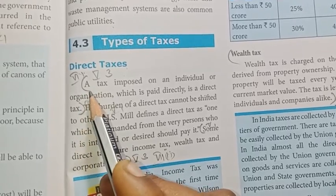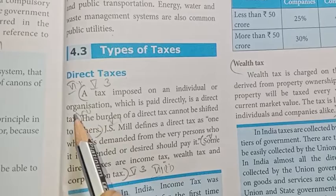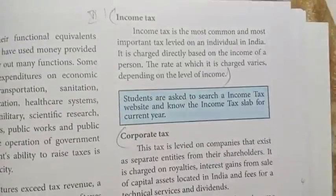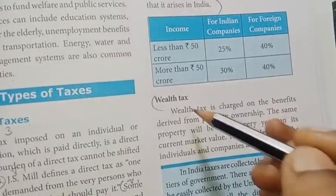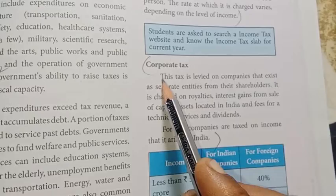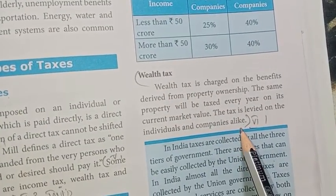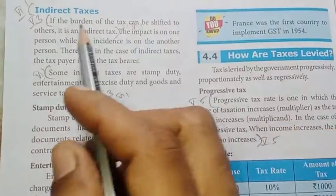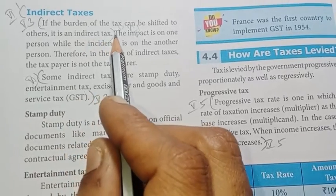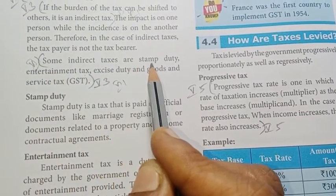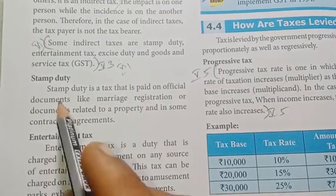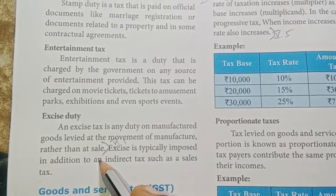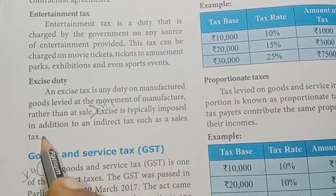Brief answer: Tax Evasion. Indirect Tax — define if the burden of the tax can be shifted to others. Indirect Tax examples include Stamp Duty, Entertainment Tax, and Excise Duty.